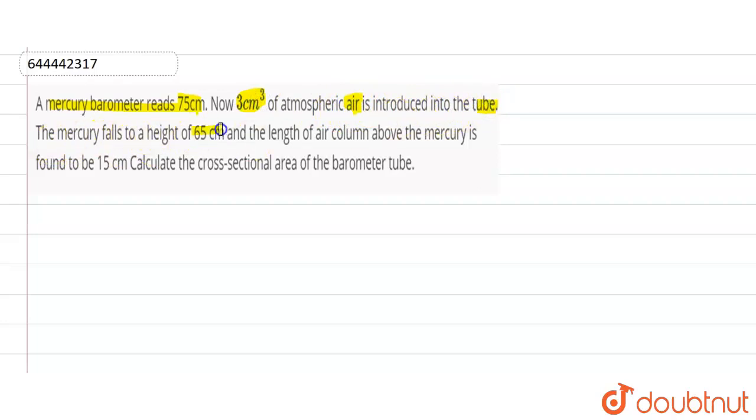The mercury falls to a height of 65 centimeters and the length of air column above the mercury is found to be 15 centimeters. So we have to find the cross-sectional area of the barometer tube.